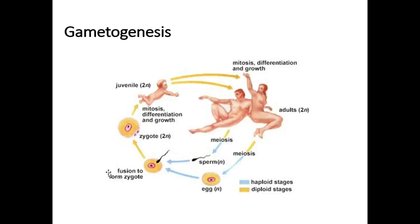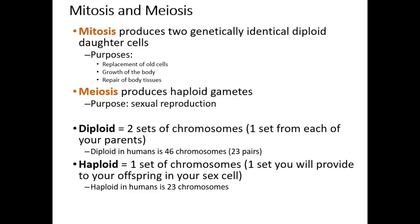In gamete formation, females have the normal complement of chromosomes. They split their genetic material in half — that process is called meiosis. The two gametes come together to become the zygote, and the zygote will develop into the baby, and the cycle goes on. I'm not going to go through mitosis because I'm assuming you've done it many times, but I'll post something about it if you need it.